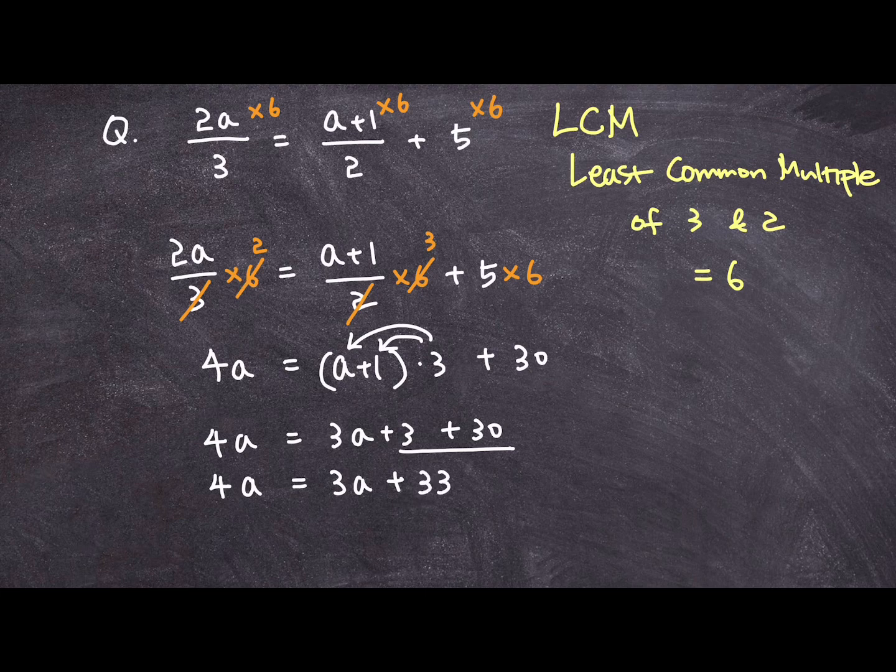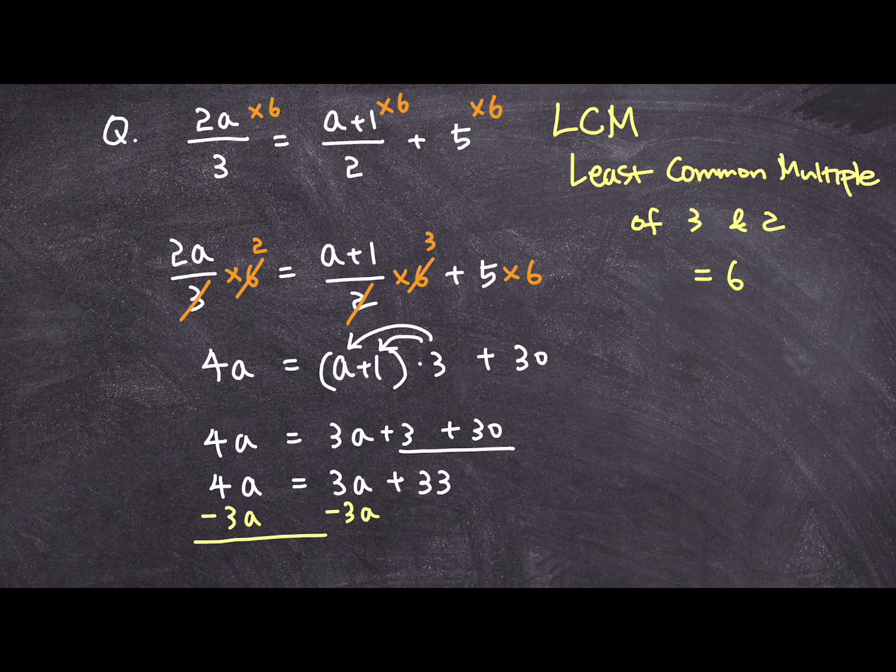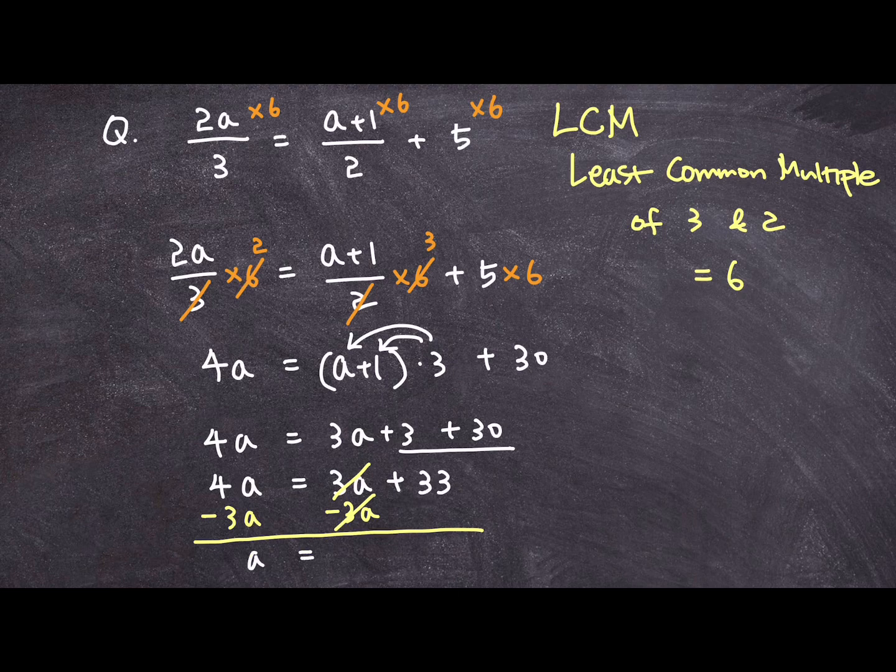And in order for me to isolate, I mean subtract all a variables and isolate a, I will go ahead and subtract 3a from both sides of the equation. I get to eliminate a from the right side of the equation and end up with a is equal to 33.